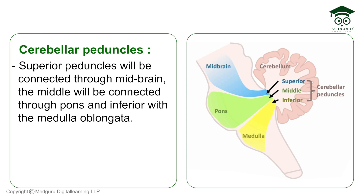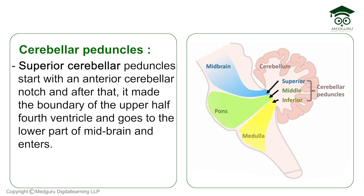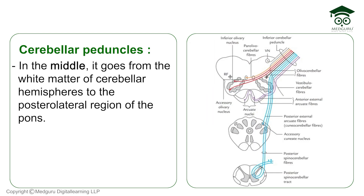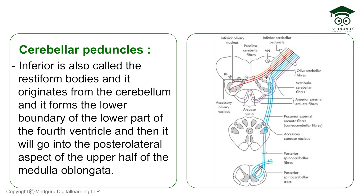The superior cerebellar peduncle starts from the anterior cerebellar nuclei, creates the boundary of the upper half of the fourth ventricle, and enters the lower part of the midbrain. The middle cerebellar peduncle goes from the white matter of the cerebellar hemisphere to the posterolateral region of the pons. The inferior cerebellar peduncle, also called the restiform body, originates from the cerebellum, forms the lower boundary of the floor of the fourth ventricle, and goes into the posterolateral aspect of the upper half of the medulla oblongata.